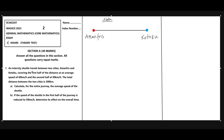We were told that it covered the first half of the distance at an average speed of 60 kilometers per hour, and the second half at 90 kilometers per hour. Since the total distance from Amanfrom to Kotoku is 300 kilometers, each half measures 150 kilometers, giving us 150 plus 150 for a total of 300 kilometers.